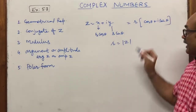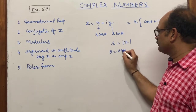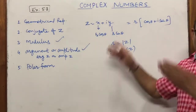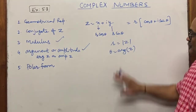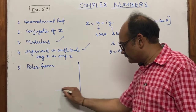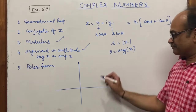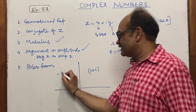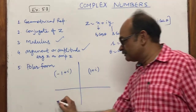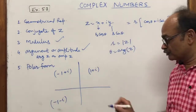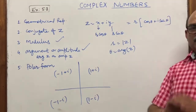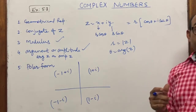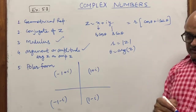In polar form, x = r·cos θ and y = r·sin θ, so the complex number becomes z = r(cos θ + iota·sin θ). Here r = |z| (modulus) and θ = argument of z. If you know how to find modulus and argument, you can easily write the polar form.